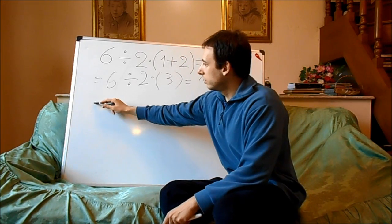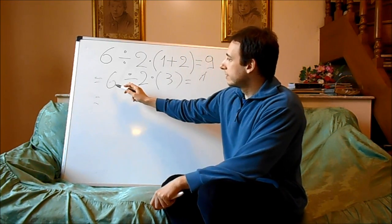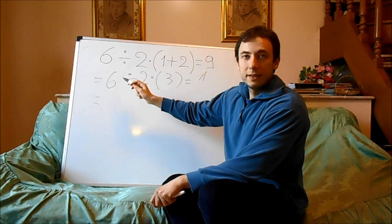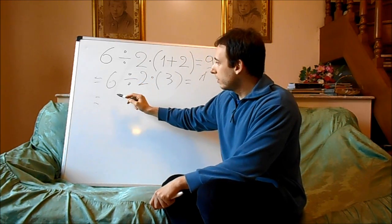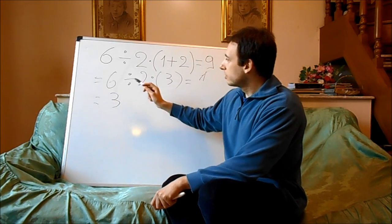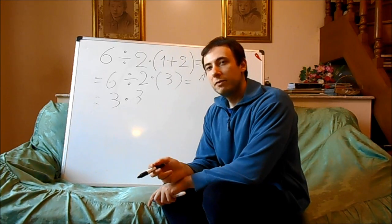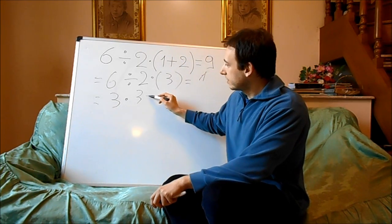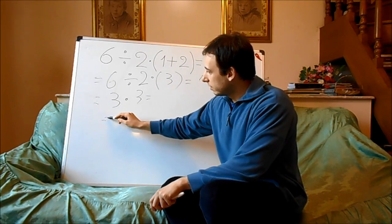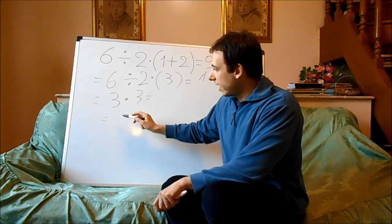Now we can go on the next line seeing that 6 divided by 2 is the next operation we have to do and its result would be 3, so 3 multiplied by 3 has to be the last operation we have to do and its result is obviously 9.